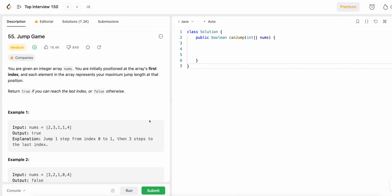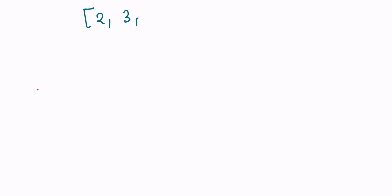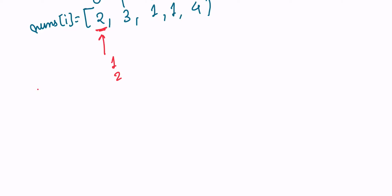Let's understand the algorithm using example one: nums = [2, 3, 1, 1, 4] at indices zero through four. When we are at index zero, we can take either one or two steps — our maximum is two. But how do we decide which step to take? That is our key dilemma, and we'll use the concept of a boundary variable to resolve it.